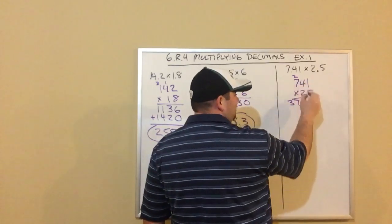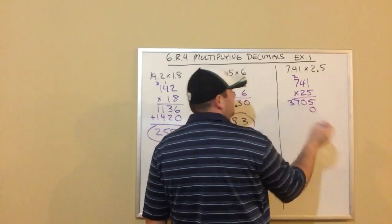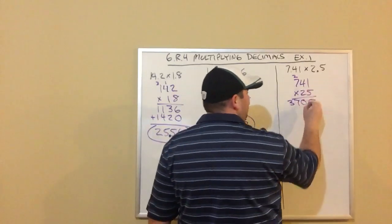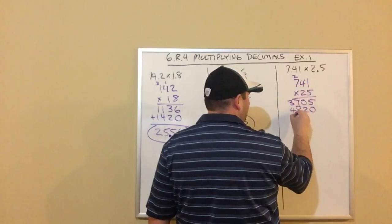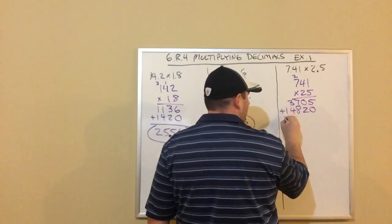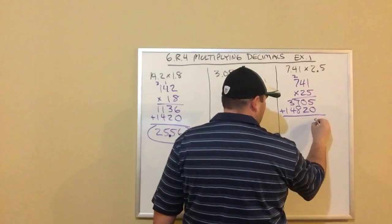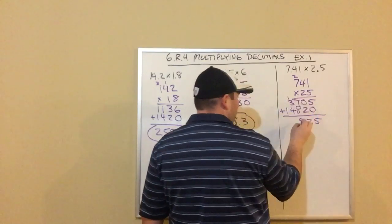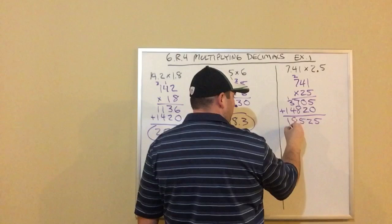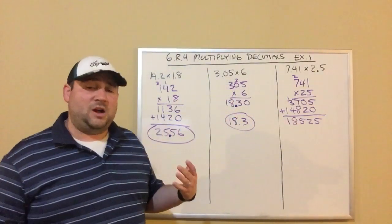Now I'm going to do 2 times each digit, but remember add a 0 because really it's 20 times each digit. 2 times 1 is 2, 2 times 4 is 8, 2 times 7 is 14. I'm going to add those together. That's 5, that's 2, that's 5, carry the 1, 8, 1.